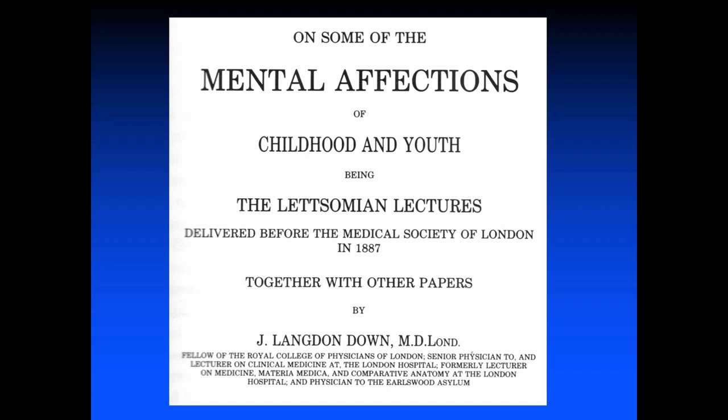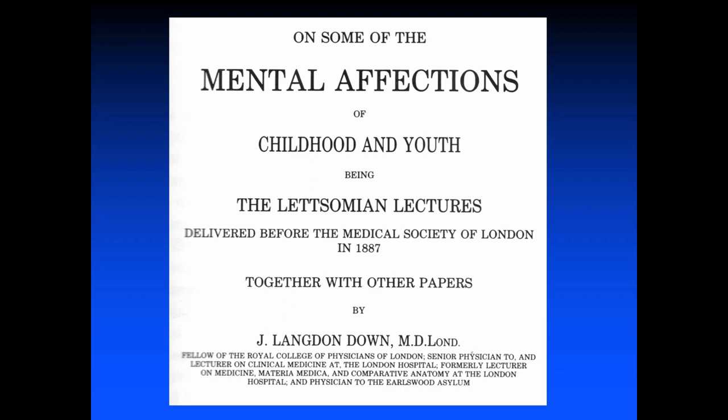He didn't stop there. In 1887, he published a book — I have a reproduction right here — entitled 'On Some of the Mental Affectations of Children and Youth, Being the Lettsomian Lectures, Delivered Before the Medical Society of London in 1887, Together with Other Papers, by J. Langdon Down, M.D., London.' And this is where Langdon Down enters the story of ASD.